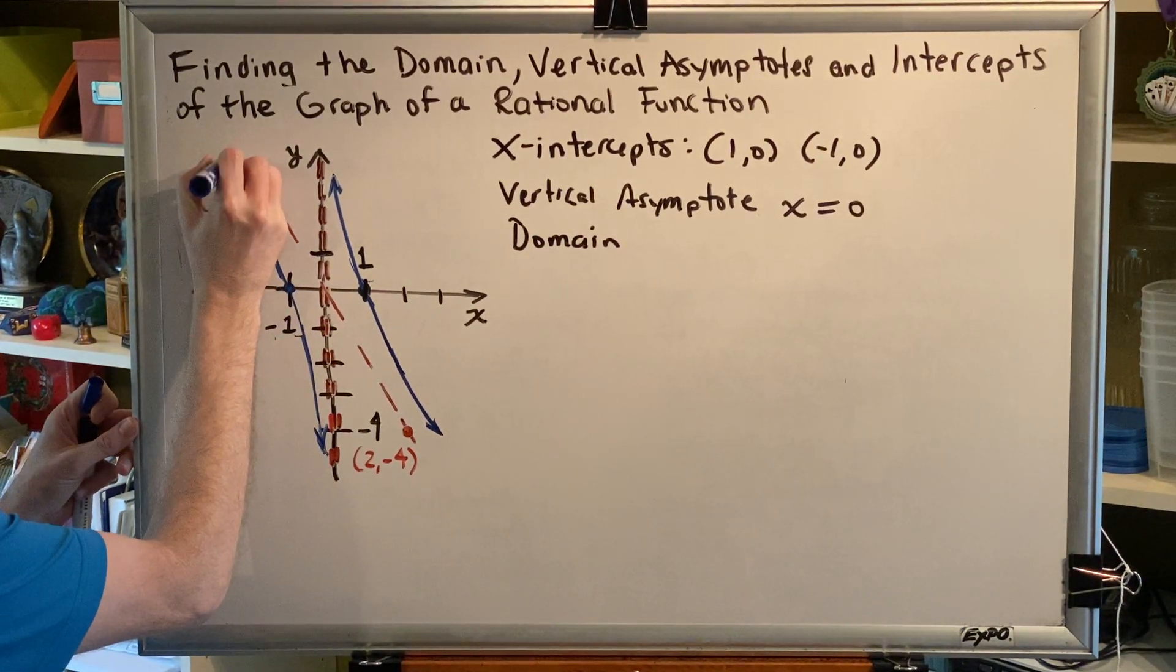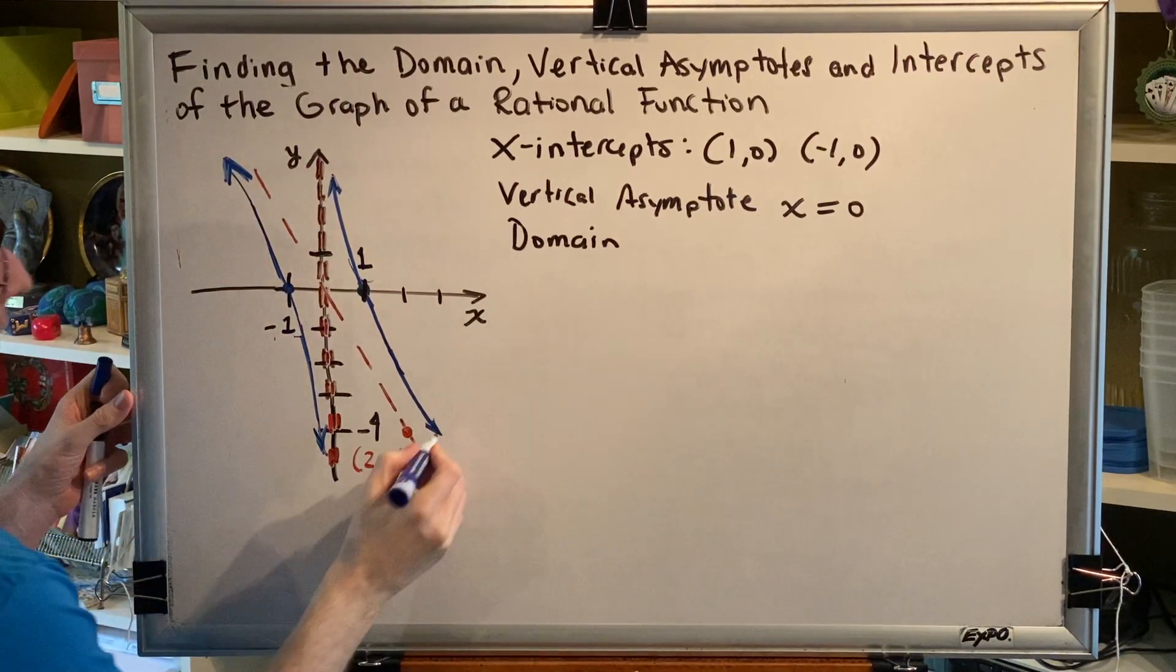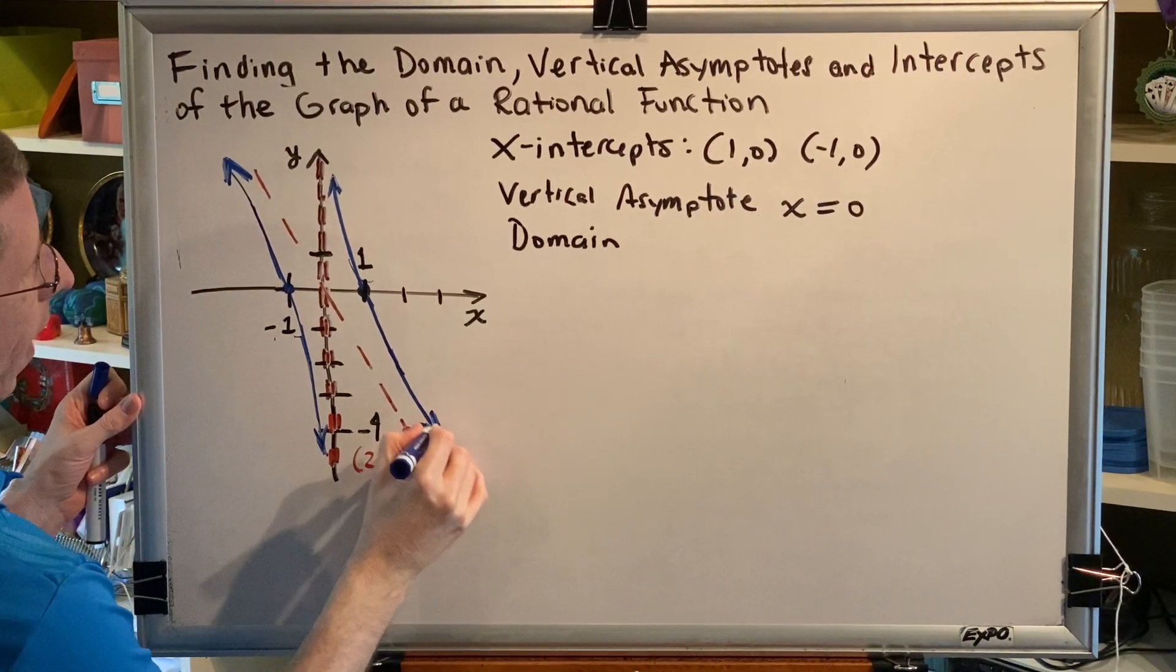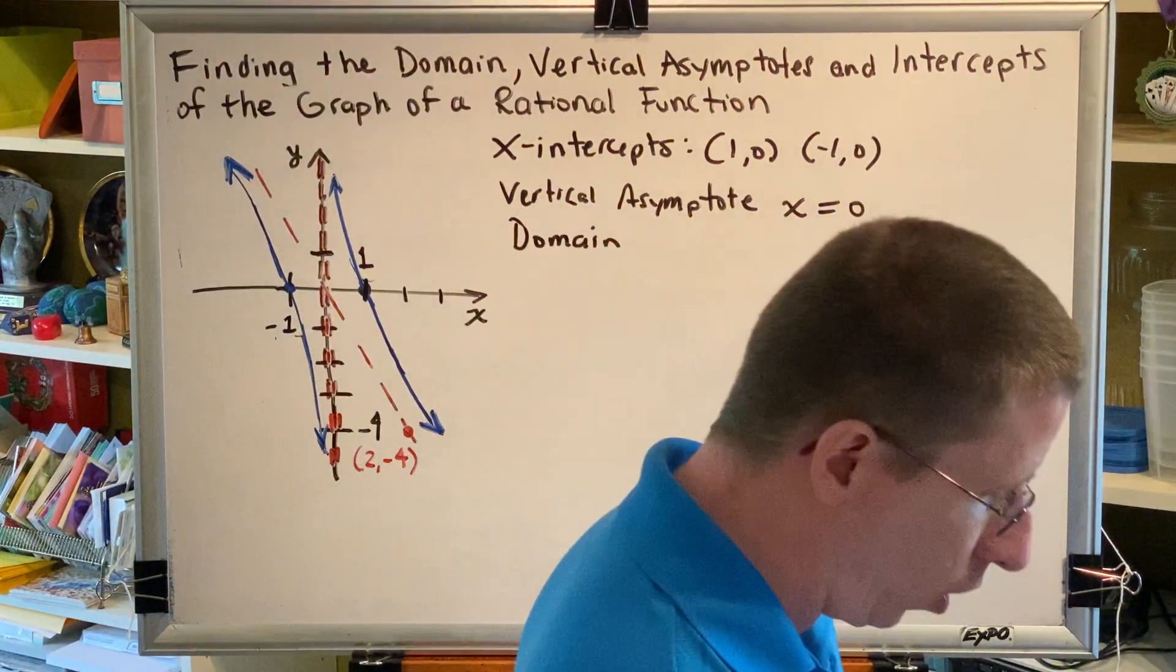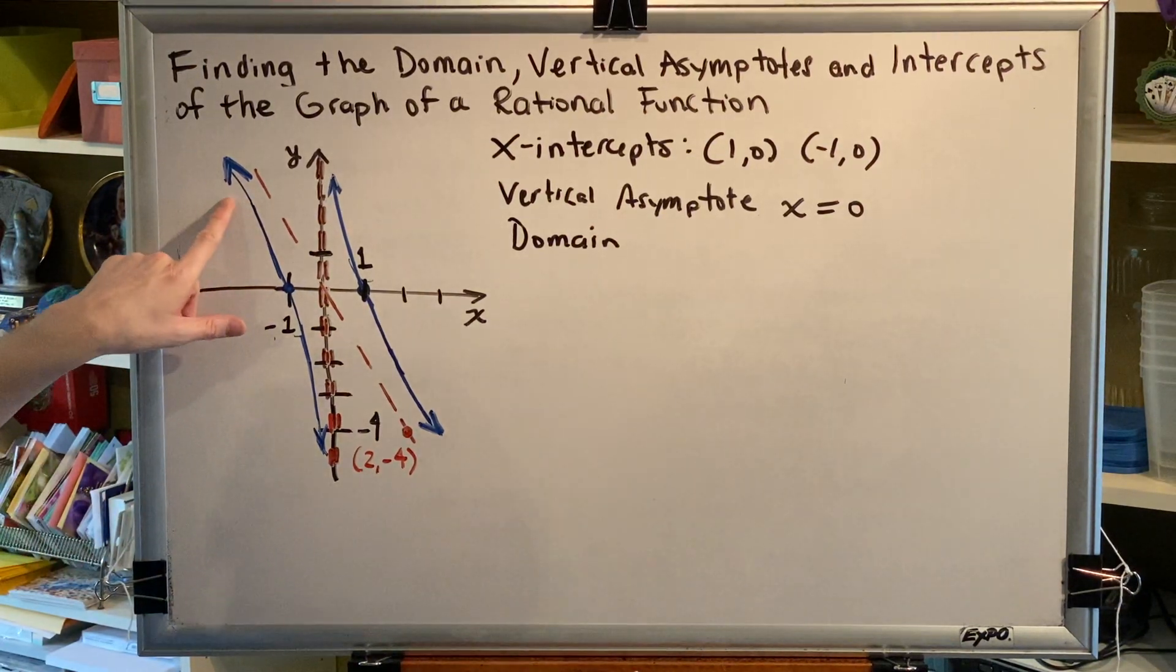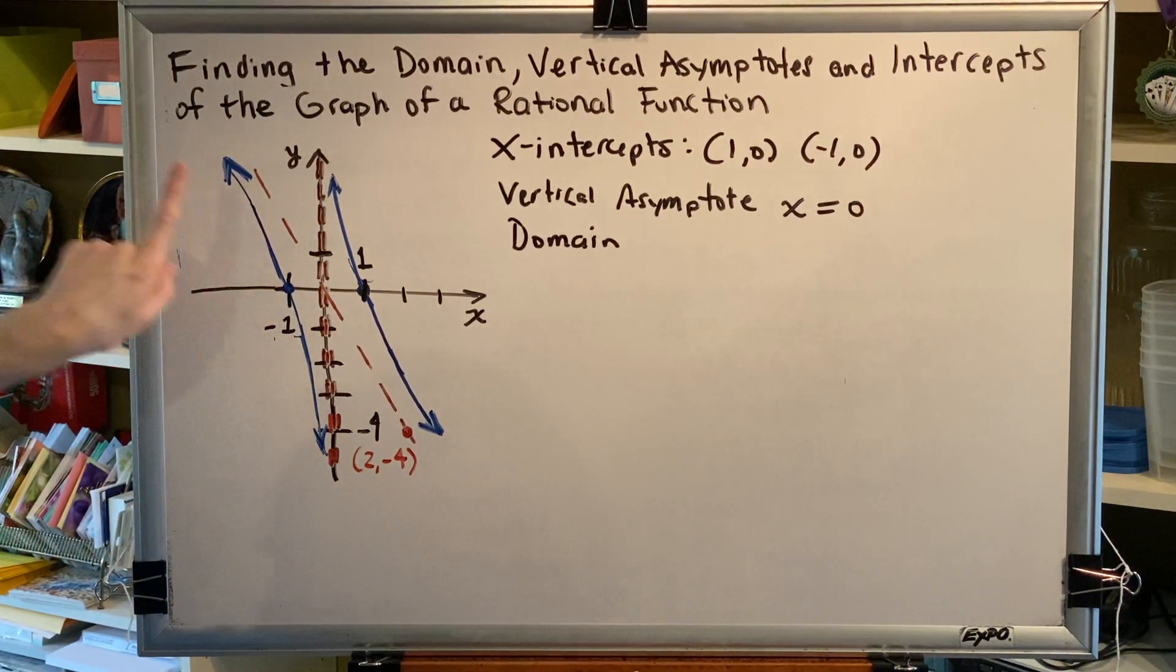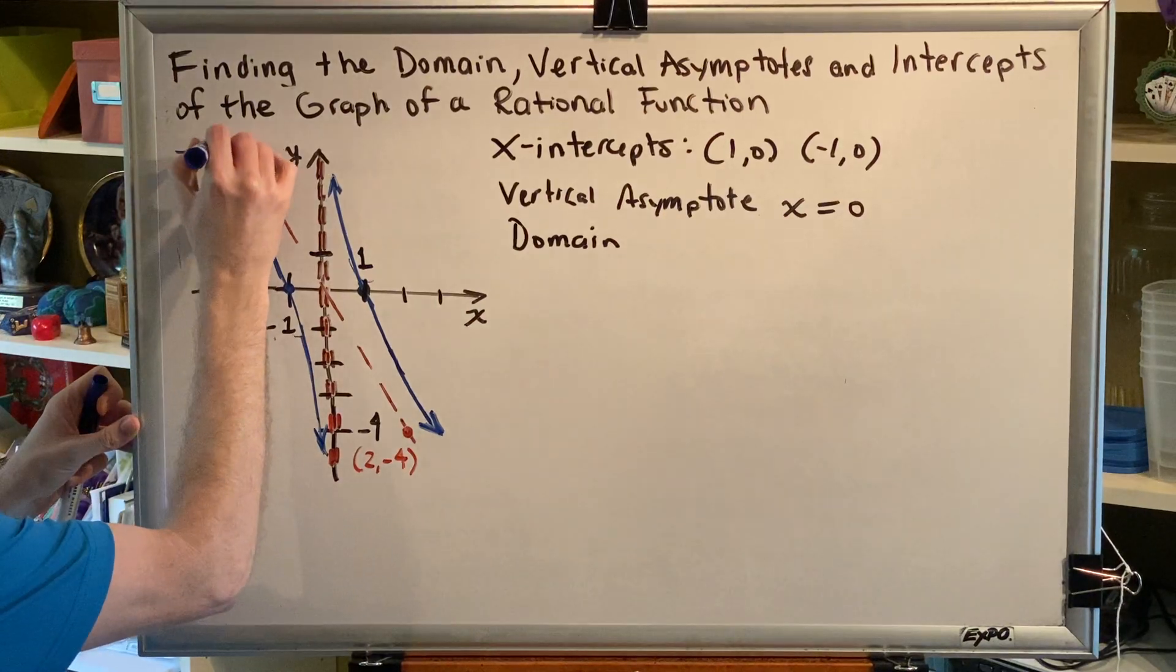So this arrowhead is the part of the graph that is farthest to the left. This arrowhead is the part of the graph that is farthest to the right. Domain measures how far your graph goes left or right. So even though this arrowhead is pointing in two directions, left and up, the only part of it we care about is the left part, which means its contribution to the domain, left forever, would be negative infinity.